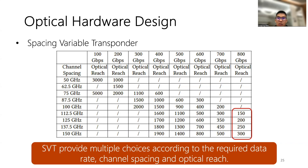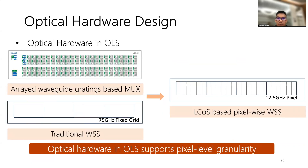This table shows the detailed parameters of SVT. There are multiple choices according to the length of optical paths, data rates, and signal carriers. As the wavelength channel spacing provided by the transponder changes, we introduce fine-granularity WSS that reduces spectrum granularity from 75 GHz down to 12.5 GHz, namely pixel-wise WSS. Therefore, the passband width is adjustable based on the number of pixels selected, adapting to the wavelength channel spacing.